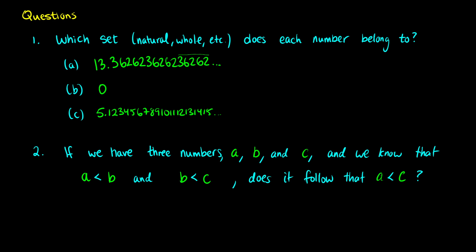We have 13.36262362... with a repeating pattern denoted by the little line above, meaning those numbers repeat. So the numbers after the decimal point are predictable, which means this is a rational number — we write this as Q. It is not an integer. If it were something like just 13, then it would be an integer and rational, but in this case it is a rational number that is not an integer.